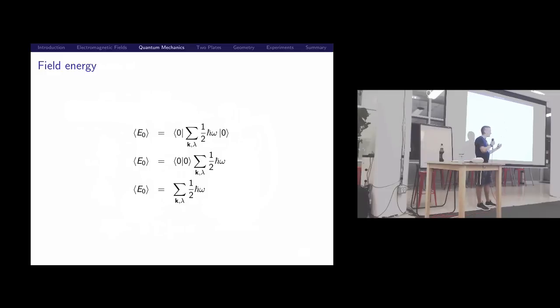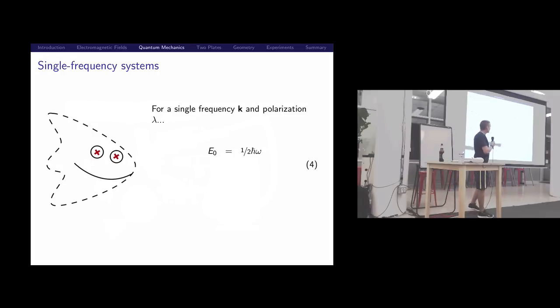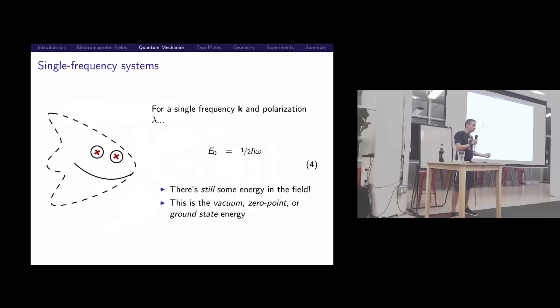We can take that state zero and bring it inside the sum. You can't take anything away from an empty box. So this A acting on the state zero, that's just gonna be zero. It disappears. All we're left with is the sum over one-half h bar omega, and then that empty state. The energy of an empty electromagnetic field is the sum over all the wavelengths you could get of one-half h bar omega.